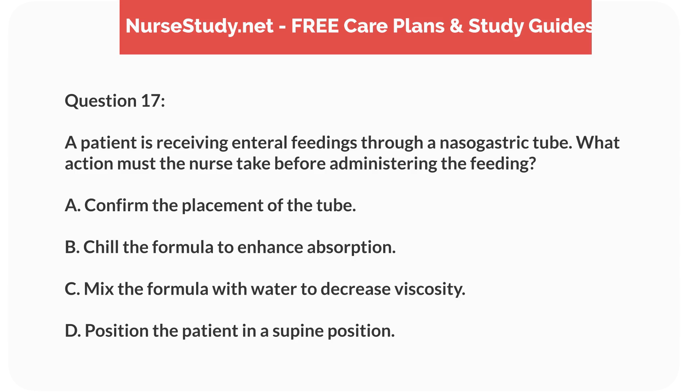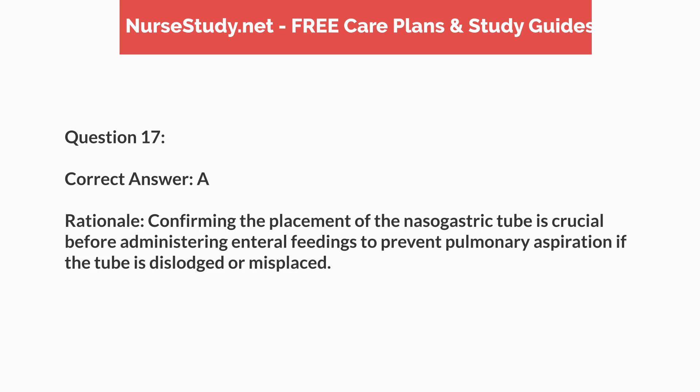Question 17. A patient is receiving enteral feedings through a nasogastric tube. What action must the nurse take before administering the feeding? A. Confirm the placement of the tube. B. Chill the formula to enhance absorption. C. Mix the formula with water to decrease viscosity. D. Position the patient in a supine position. Correct answer: A. Rationale: confirming the placement of the nasogastric tube is crucial before administering enteral feedings to prevent pulmonary aspiration if the tube is dislodged or misplaced.